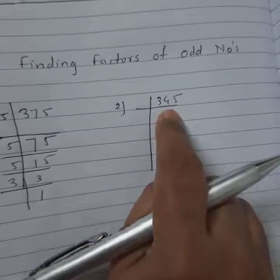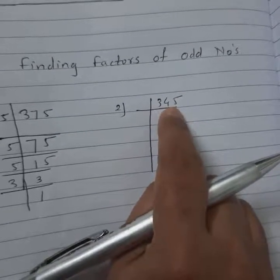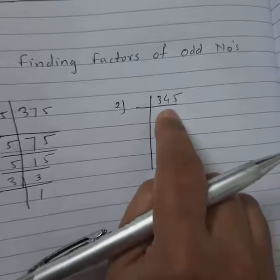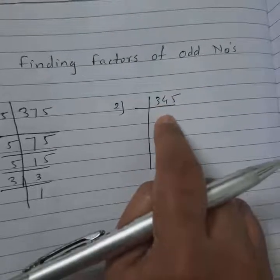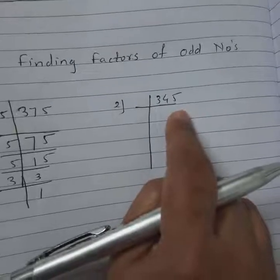Check another number - the last two digits, 45. 45 is divided by 5, so this 345 is divided by 5 and also divided by 3.